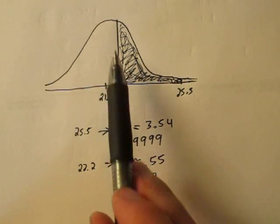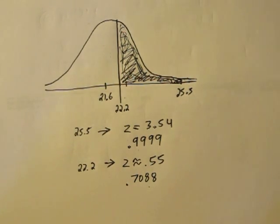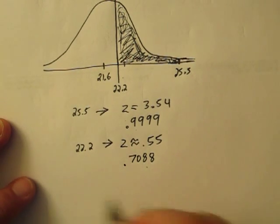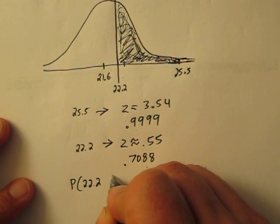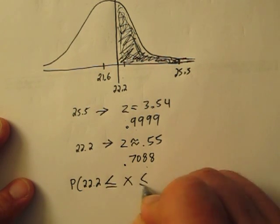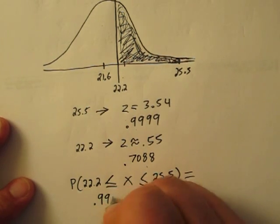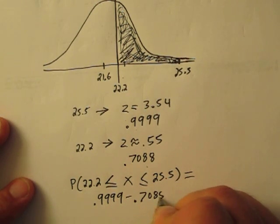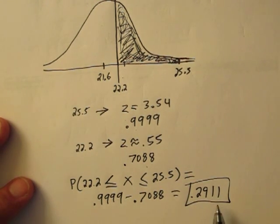This 0.7088 is representing this big blank area here. So if we subtract these two numbers and find the difference, we'll have the area we actually want. So the probability that the sample mean is between 22.2 and 25.5 equals our first area minus our second area. So a little shy of 30%.